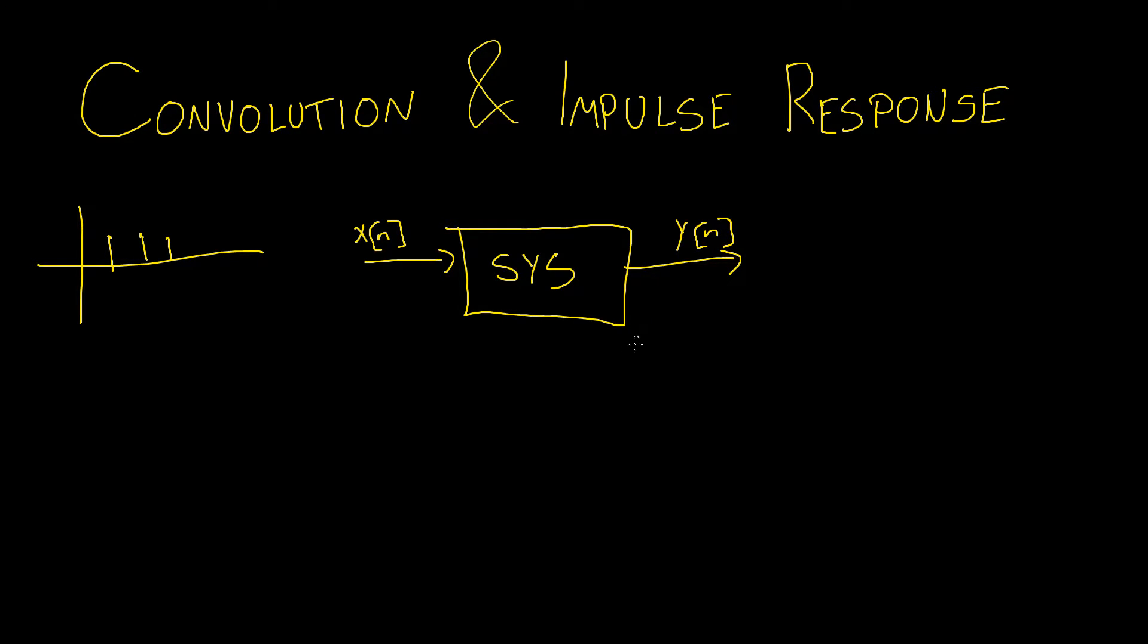Okay, so when we're talking about how our system is changing our input signal, the best way to do this is by talking about the system's impulse response. If we think of x as just multiple impulses as we have here, we can calculate how the system will respond to a specific impulse of x and then we can extrapolate that to see how it will respond to any impulse of x.